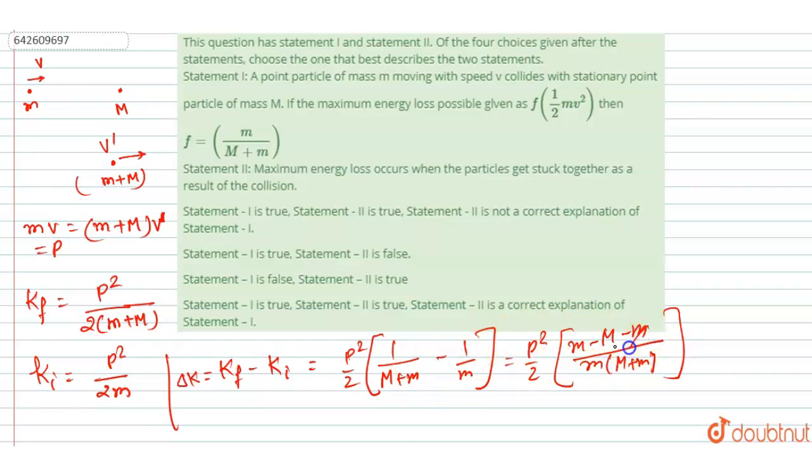So here it will be m minus m minus M. So this m and this m will get cancelled out. And p squared will be m squared v squared by 2 into m times (m + M). So this m and this m will get cancelled out.